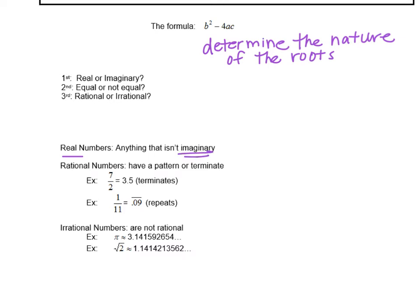Rational numbers, well actually I don't want to skip equal or not equal. I'm going to talk about that in a minute, but basically if the two answers are the same, then it's equal. If the two answers are different, we would say not equal. And that's going to make more sense in a minute. And then the third thing we determine is if it's rational or irrational.